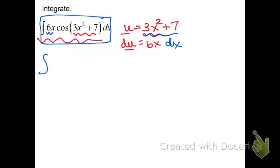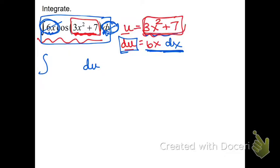So now all of this is going to be rewritten with no x's left. So the 6x right here and the dx right here, these two things together get replaced by what they equal. 6x and dx is equal to du. So I'm going to take everything I have here in blue, replace those with a du. Everything inside here, 3x squared plus 7, that's the same as u. So I'm going to replace that with a u, but this cosine I can't get rid of. I don't have anything to replace it with. So I have cosine u du.